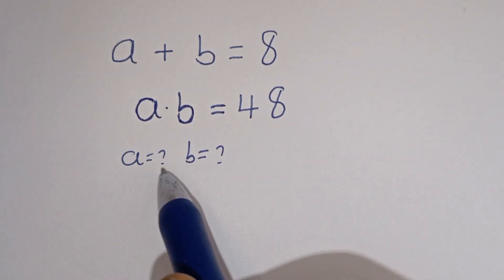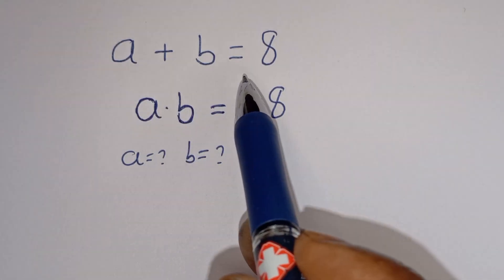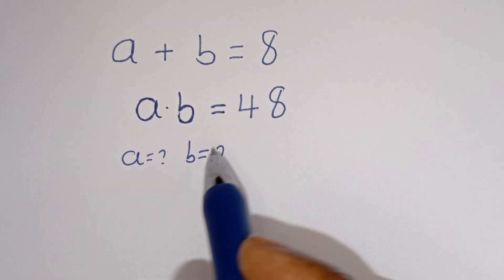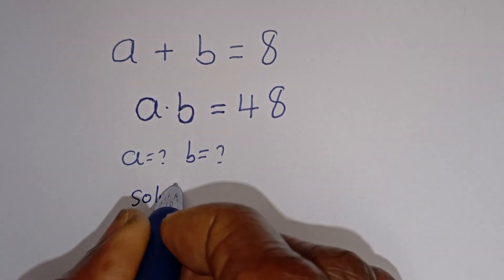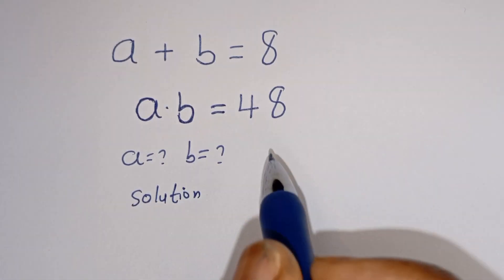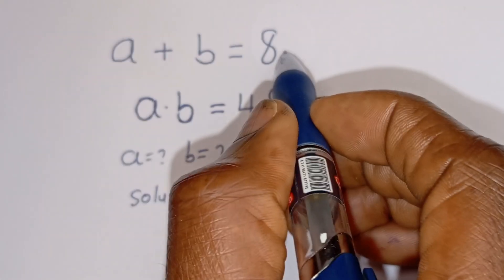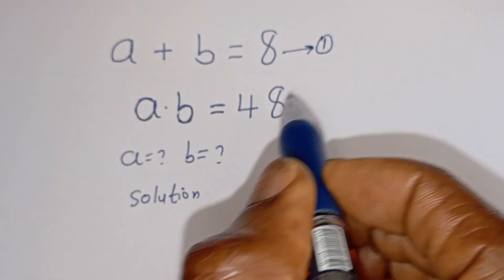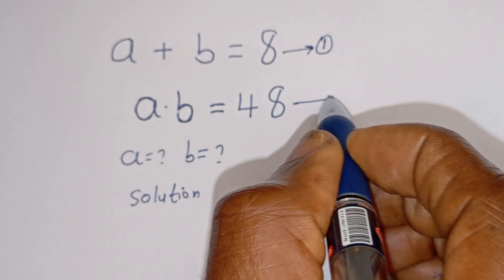Hello. How to solve for A and B in this problem? A plus B is equal to 8, and A times B is equal to 48. Solution. A plus B is equal to 8 — let's call this equation 1. A times B is equal to 48 — let's call this equation 2.